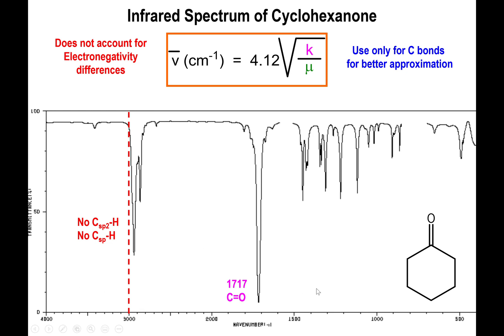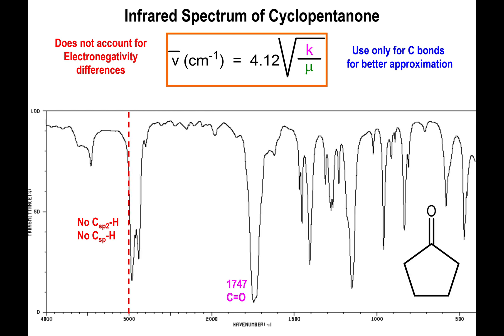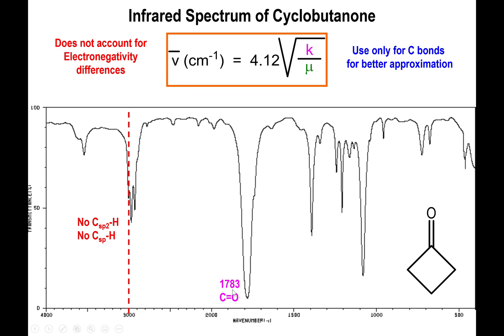Notice what happens when I start contracting the size of the ring. Going to the 5-member ring, it's no longer in the 17-teens — now it's close to 1750. That's a pretty big increase in wave number. The peak itself is pretty strong in magnitude. And if we contract the ring further to the 4-member ring, it goes even higher to 1783.